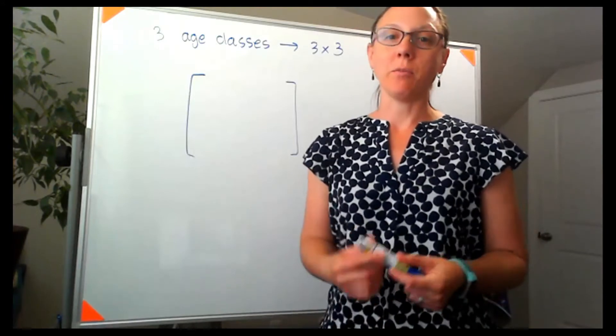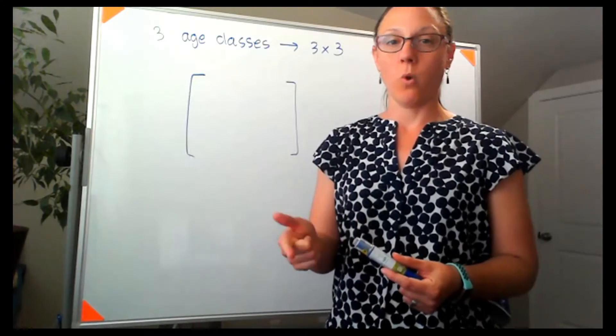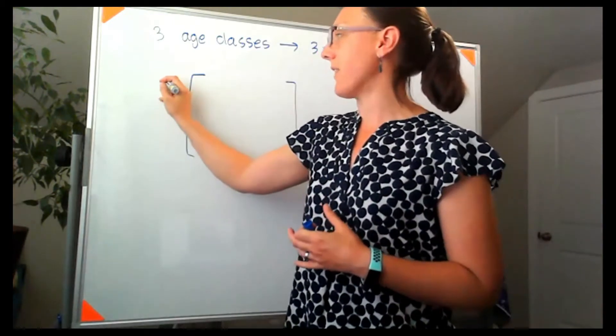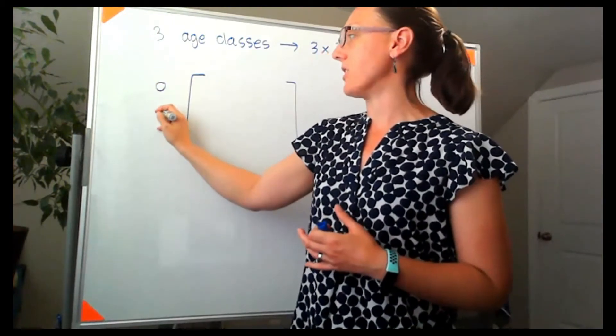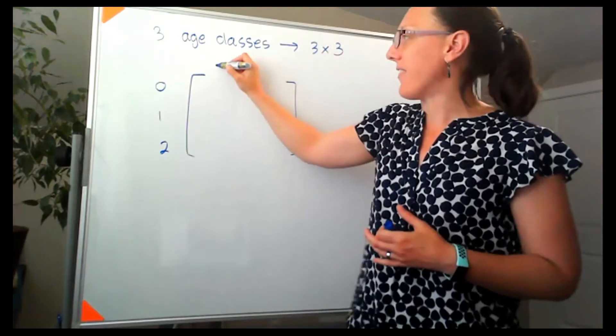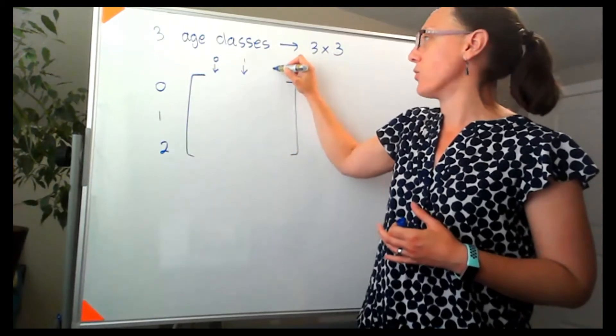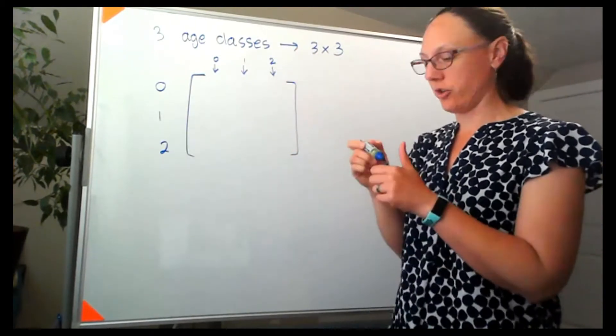So I labeled these age classes age 0, 1, and 2. I'm just going to give myself a reminder that this is telling me what's happening to age 0, 1, and 2, and that the inputs here are coming from age 0, age 1, and age 2.